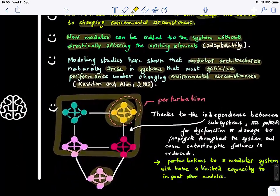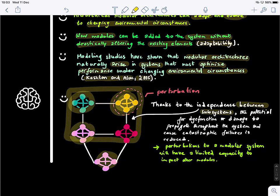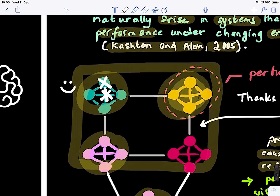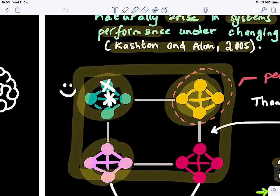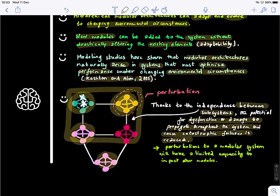The last advantage is that thanks to independence between subsystems — these modules are independent — the potential for dysfunction or damage to propagate throughout the system and cause catastrophic failures is greatly reduced, especially with a local perturbation to a node or an edge in a single module. Perturbations to a modular system will have a limited capacity to impact other modules if they are local.